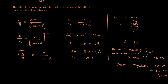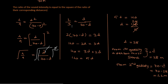Taking the square root of both sides: d divided by (70 minus d) equals 2 by 3. By cross multiplication: 2 times (70 minus d) equals 3 times d. That gives 140 minus 2d equals 3d, so 140 equals 5d.